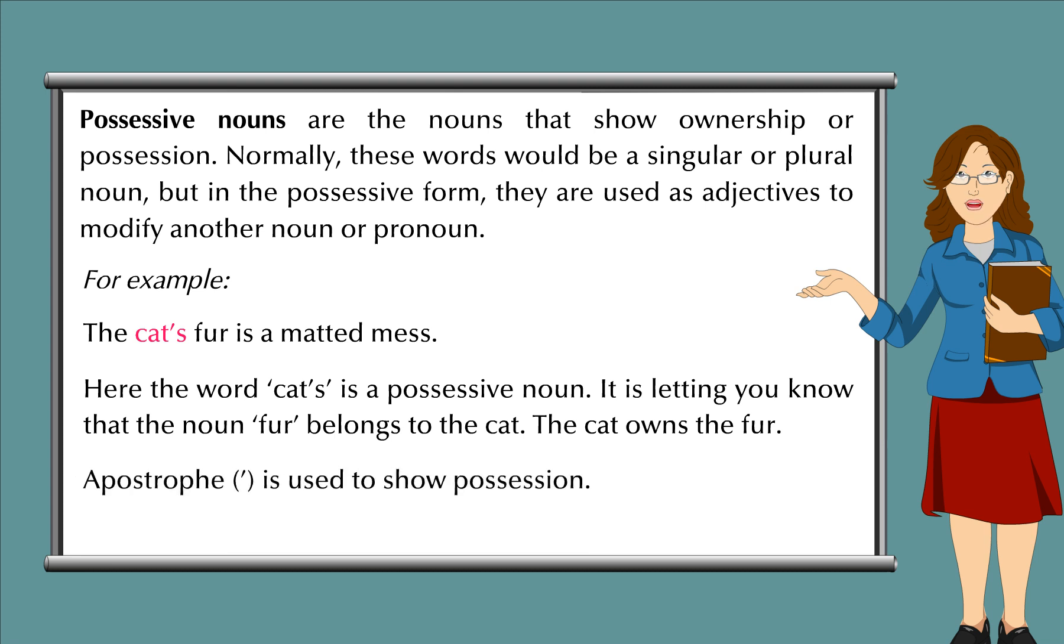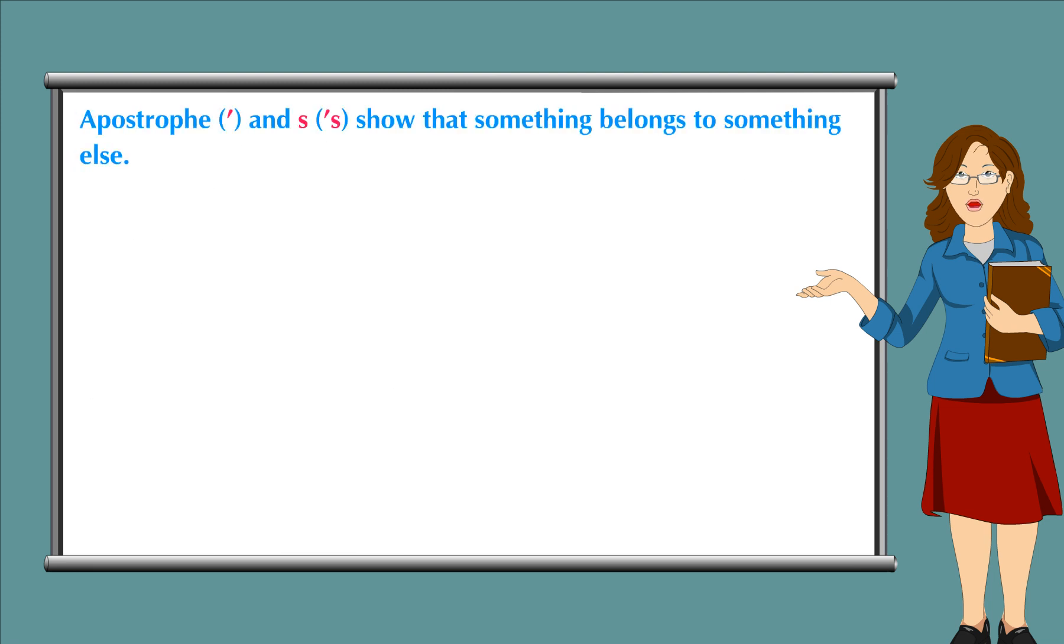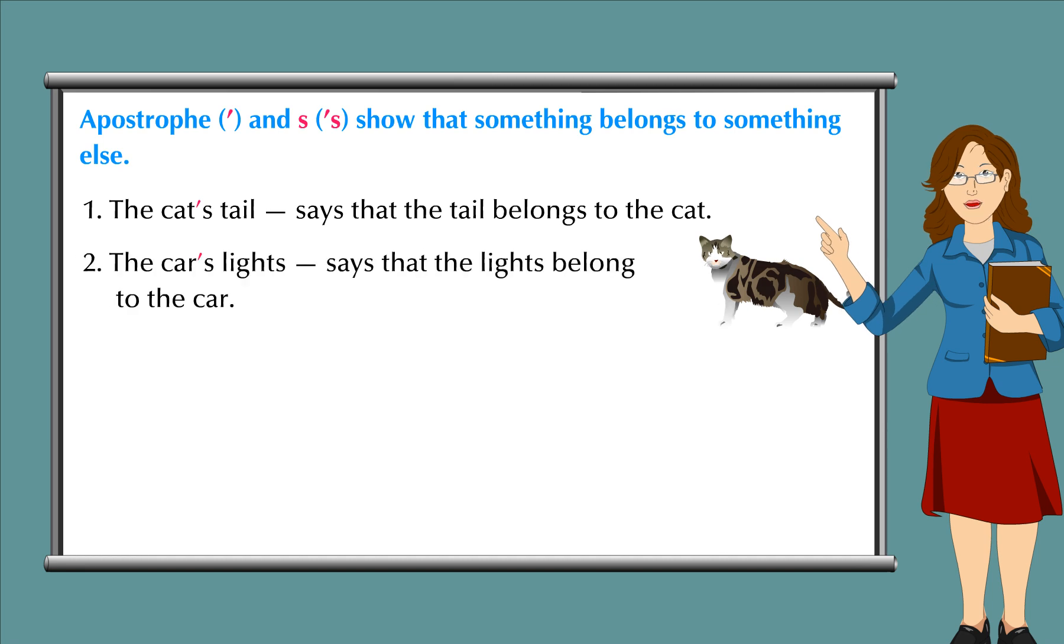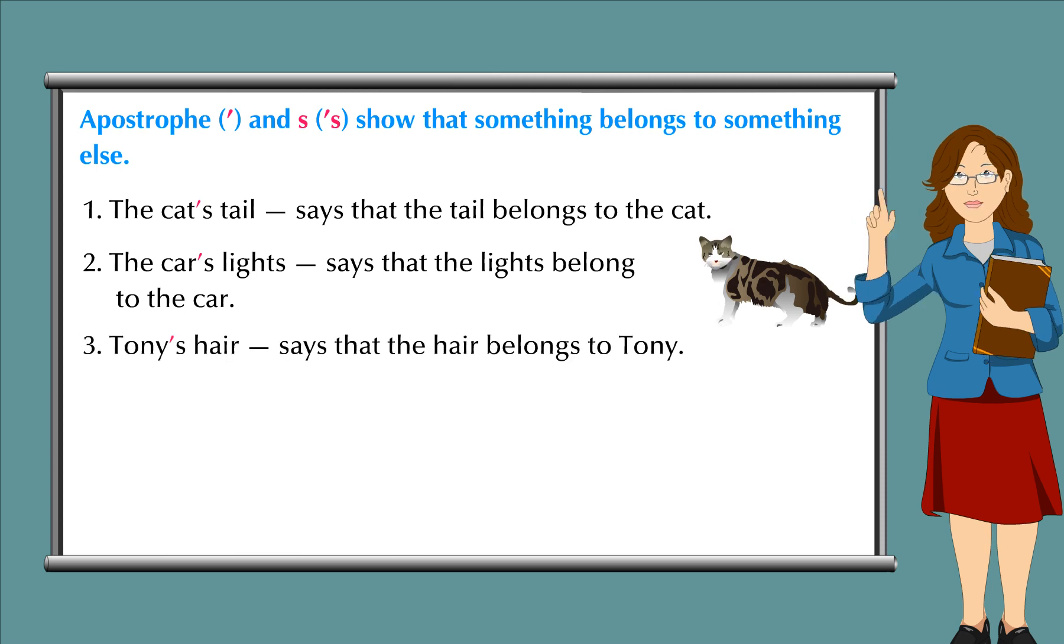Apostrophe is used to show possession. Apostrophe and 's' show that something belongs to something else. 1. The cat's tail says that the tail belongs to the cat. 2. The car's lights say that the lights belong to the car. 3. Tony's hair says that the hair belongs to Tony.